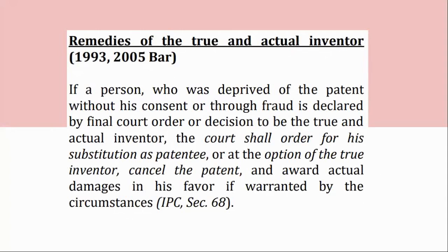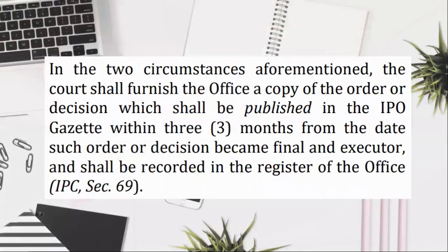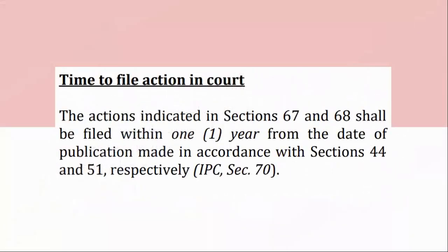In the two circumstances aforementioned, the court shall furnish the office a copy of the order or decision, which shall be published in the IPO Gazette within 3 months from the date such order or decision became final and executory, and shall be recorded in the register of the office. IPC, Section 69. Time to file action in court: the actions indicated in Sections 67 and 68 shall be filed within 1 year from the date of publication made in accordance with Sections 44 and 51, respectively. IPC, Section 70.